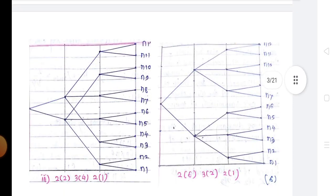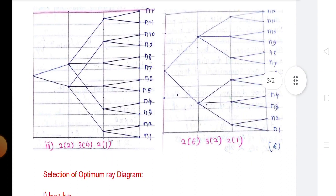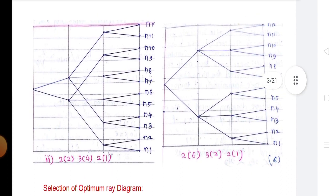Based on certain rules, the optimum structure diagram is selected. The rules are: restriction on transmission range, minimum total shaft size, minimum gears on output shaft, maximum speed ratio in last stage, and maximum number of speed steps in any stage should not be more than 3. Input speed should be closer to motor speed. These are very important for the designing of a structure diagram.